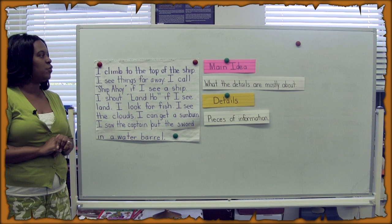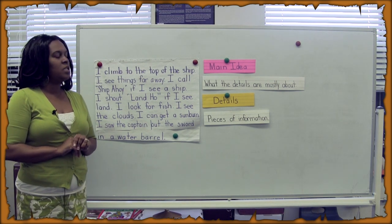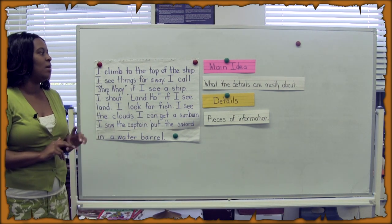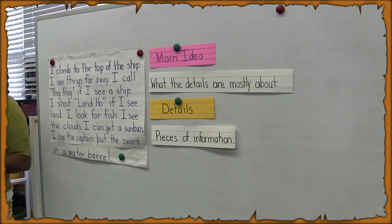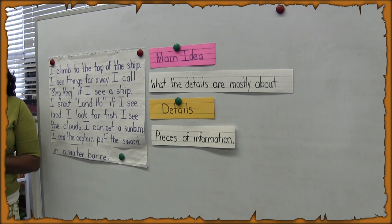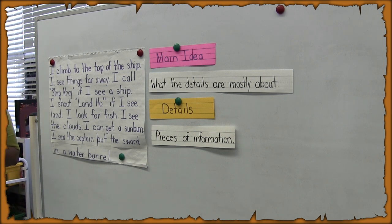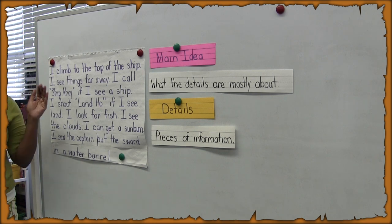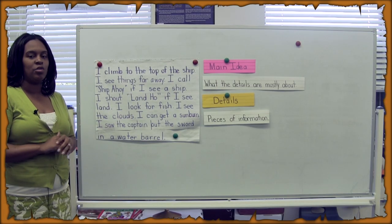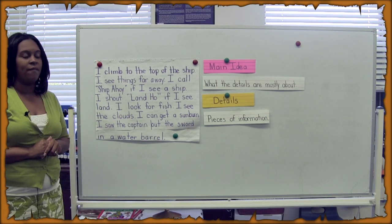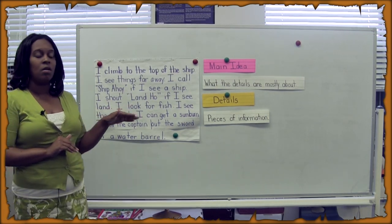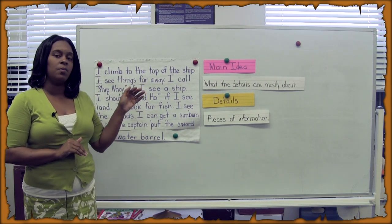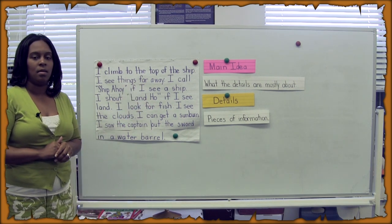First of all, let's review those key terms of main idea and detail. A main idea is what the details are mostly about — when you are reading something, you look and try to find out what that passage or paragraph is about. And the details are the pieces of information that support the main idea.